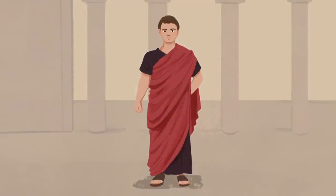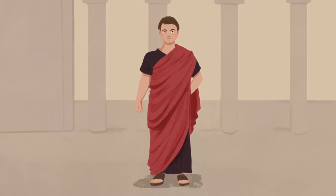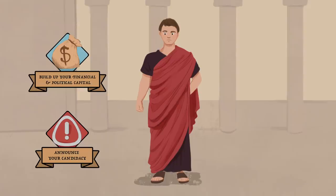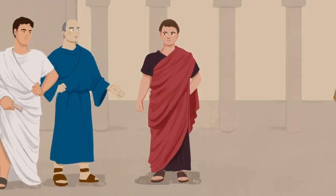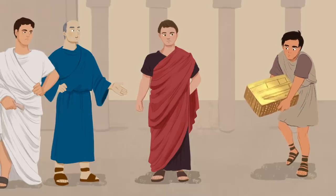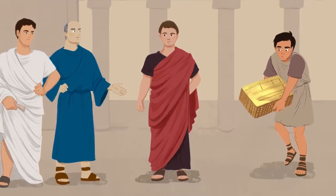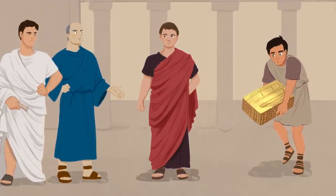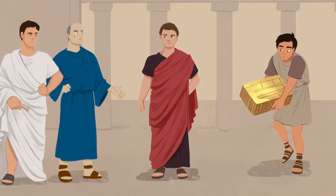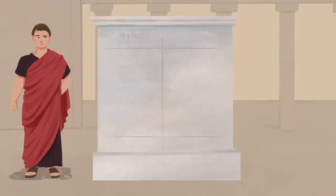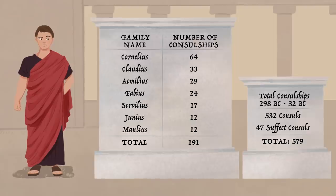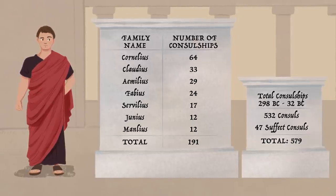So you want to launch your political campaign. As in modern times, the first steps were to build up your political and financial capital and to announce your candidacy. The first step involved establishing a network of support and building up a campaign war chest. This would be substantially easier for those with existing wealth and power, who had vast numbers of pre-established supporters as part of their clientela. To illustrate: in the roughly 260-year period from 298 to 32 BC, just 7 Roman families were responsible for winning 30% of all consular elections.